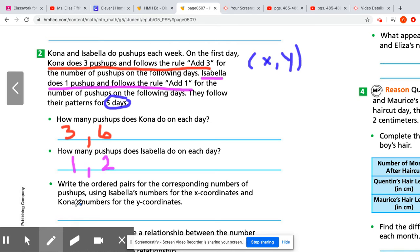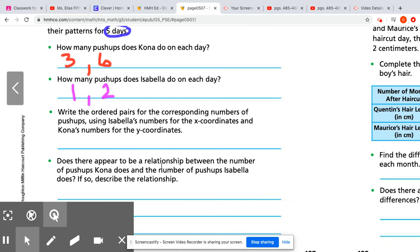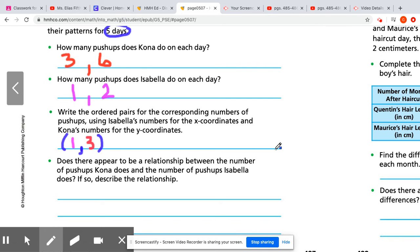So our X, they want our X to be Isabella's pattern. So Isabella is going to be the first ordered pair. So we're going to have her one here as our X. And then we're going to have Kona as the Y pattern. So that's going to be our three right here. That's our first ordered pair. And once you continue the patterns for the next five days, you're going to continue adding all those over here and then making the rest of your five ordered pairs.